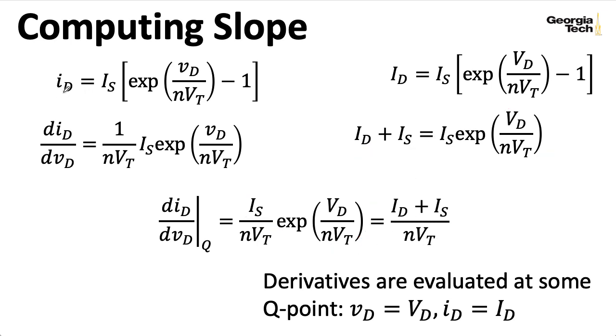If enough current is flowing through the diode that we actually care about it, it's going to be a lot bigger than this saturation current. So we'll typically approximate this as saying that the saturation current is negligible. So we can write this derivative as the quiescent current over n vt.